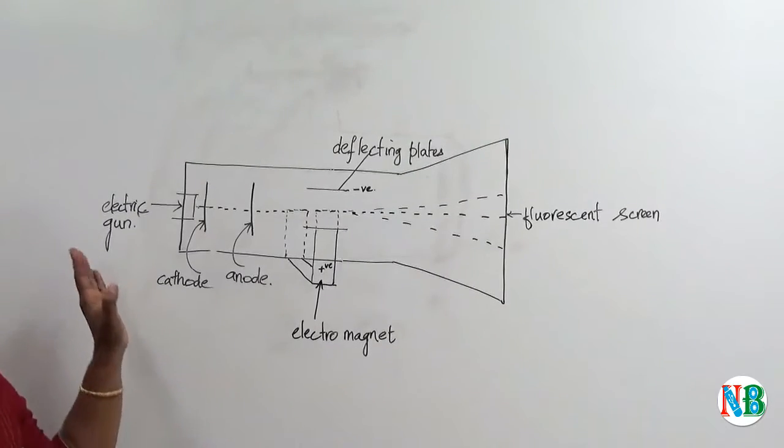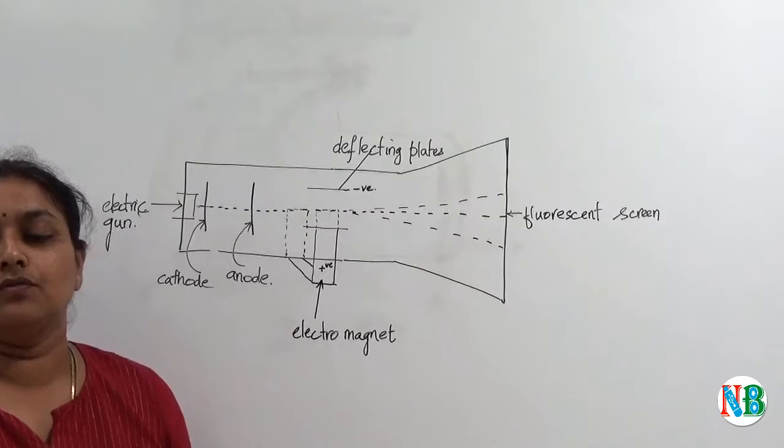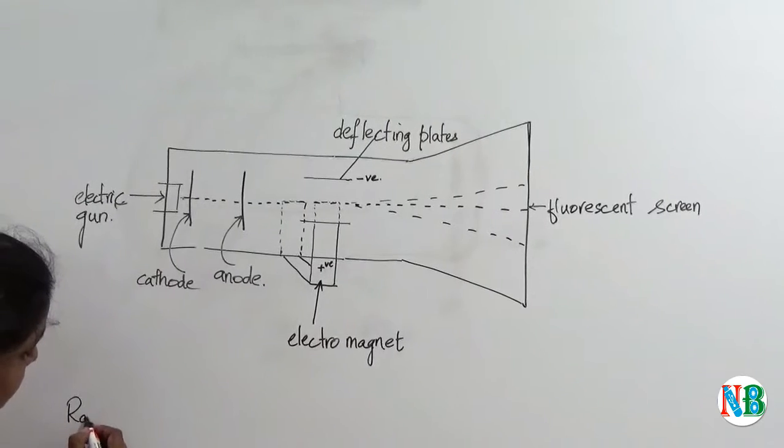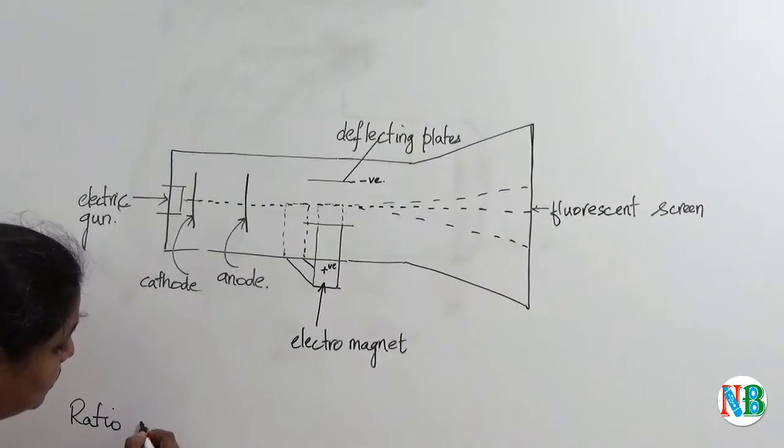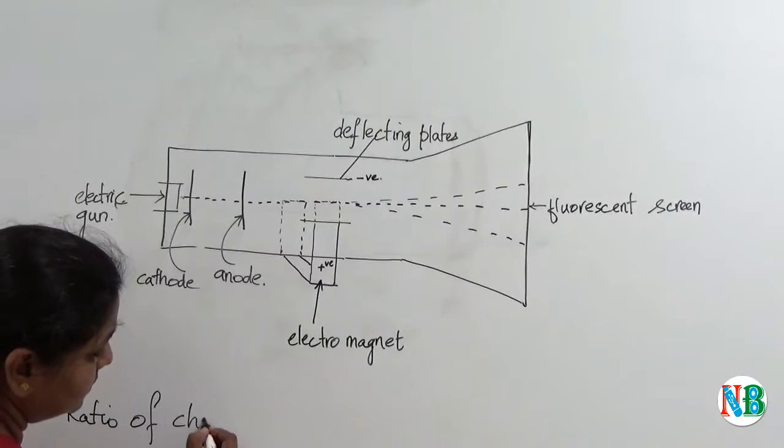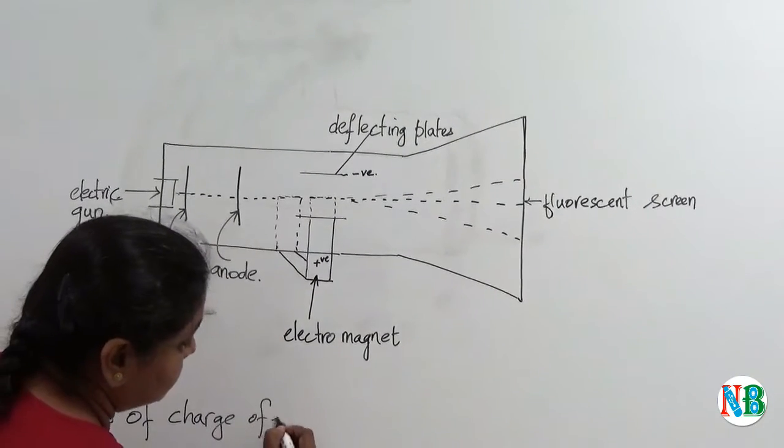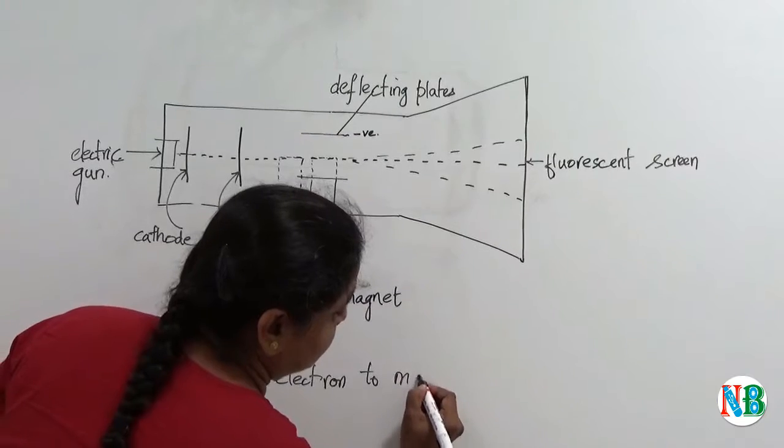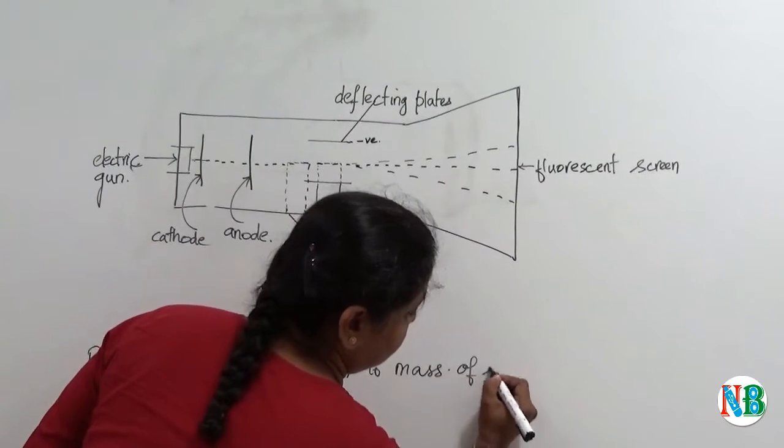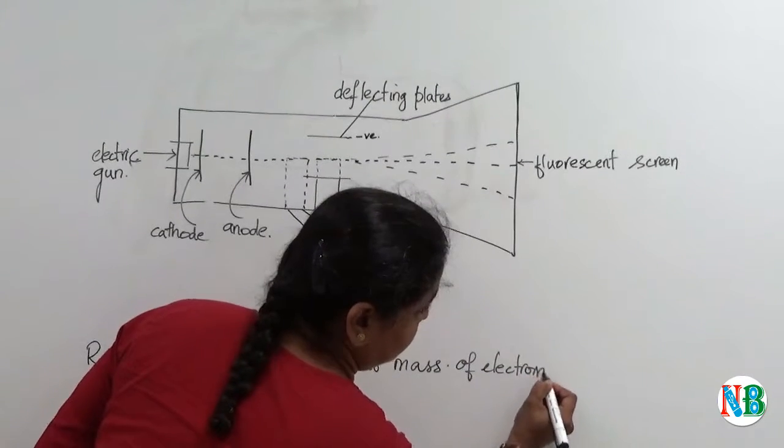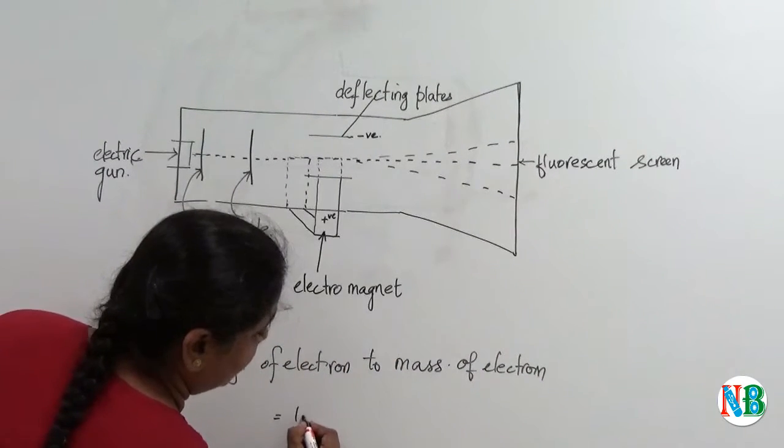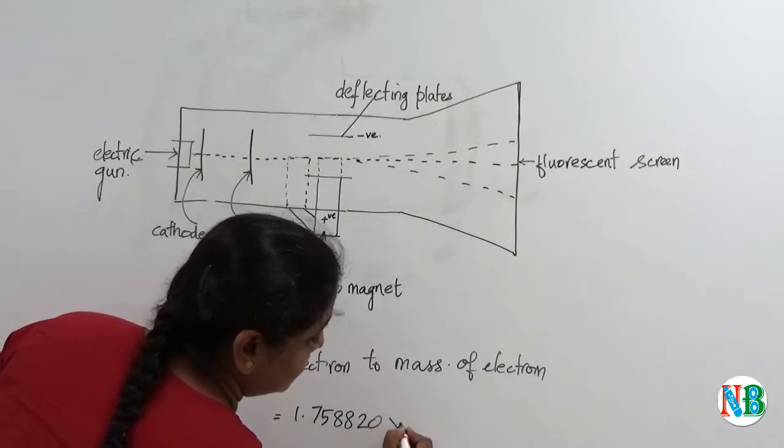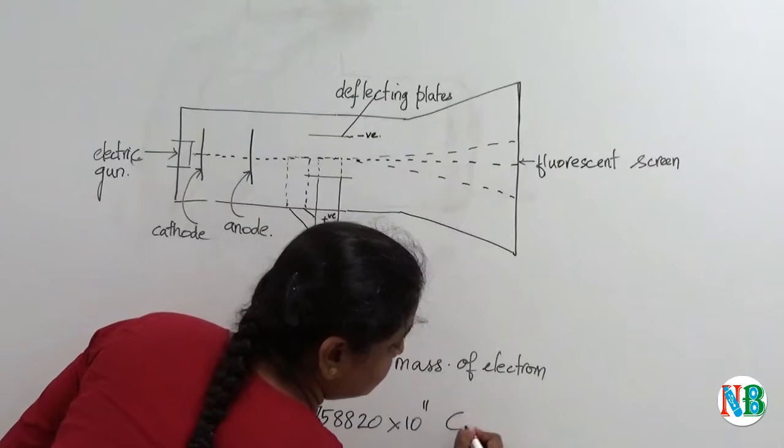Lighter the matter and greater the deflection. From this, he found out that the ratio of charge of electron to mass of electron is equal to 1.758820 into 10 to the power of 11 coulombs per kg.